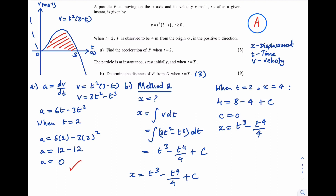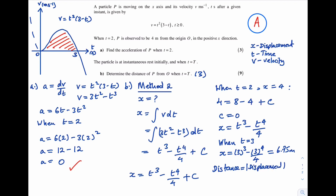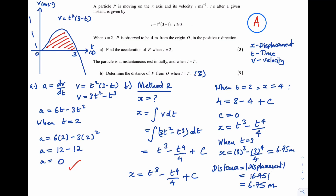We can now find the displacement when t = 3: x = 3³ - 3⁴/4 = 6.75 metres. The distance is the magnitude of displacement, so |6.75| = 6.75 metres. The distance of p from O when t = T is 6.75 metres.